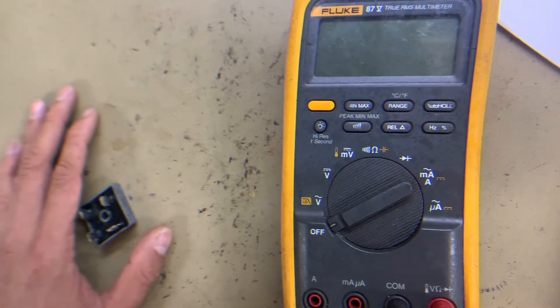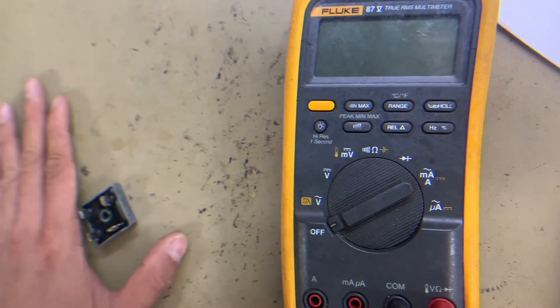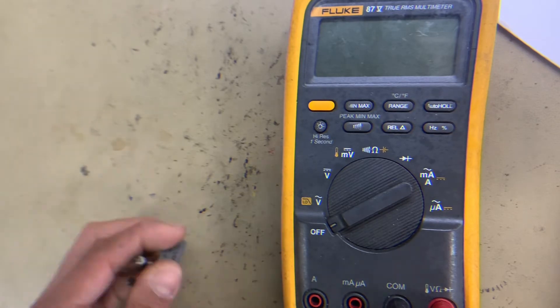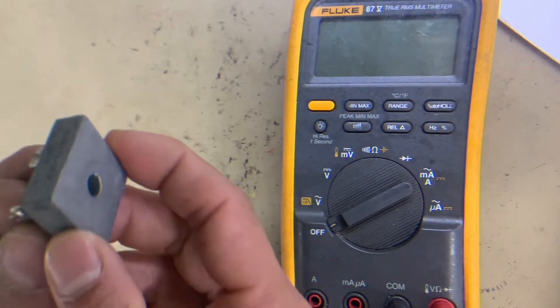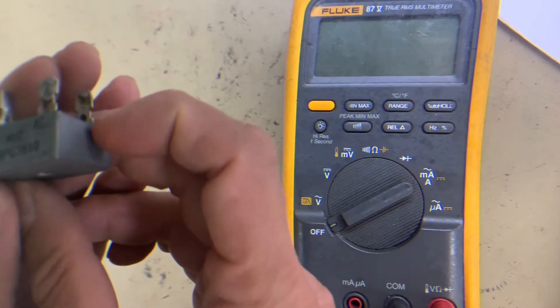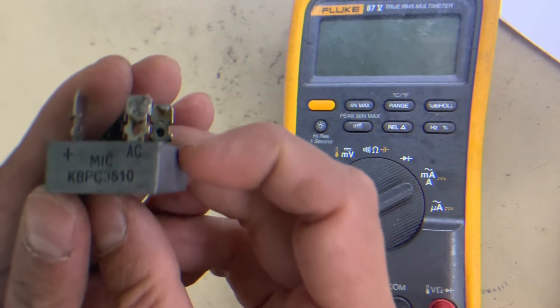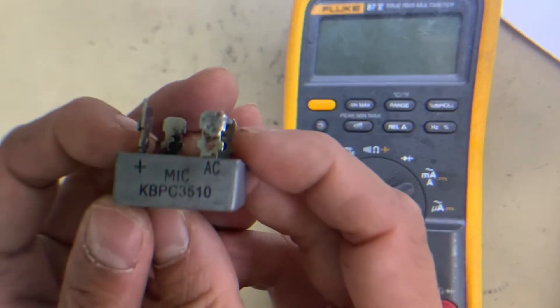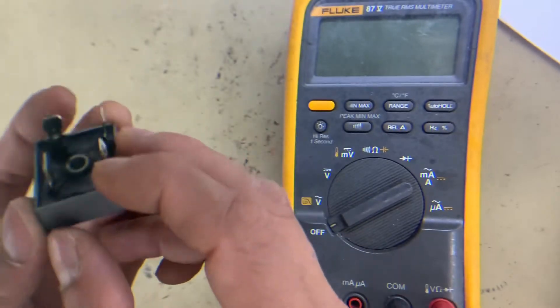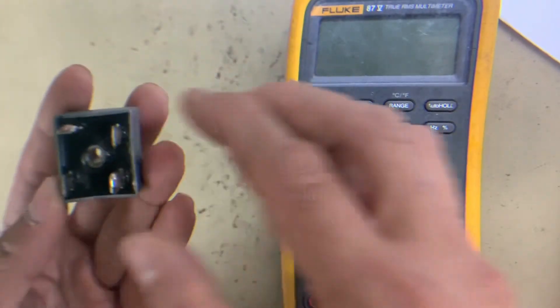Hello guys, welcome back. In this video we'll show how to test a bridge rectifier diode. This is the bridge rectifier diode, KBPC 3510. In this diode, there are four diodes connected in bridge type.